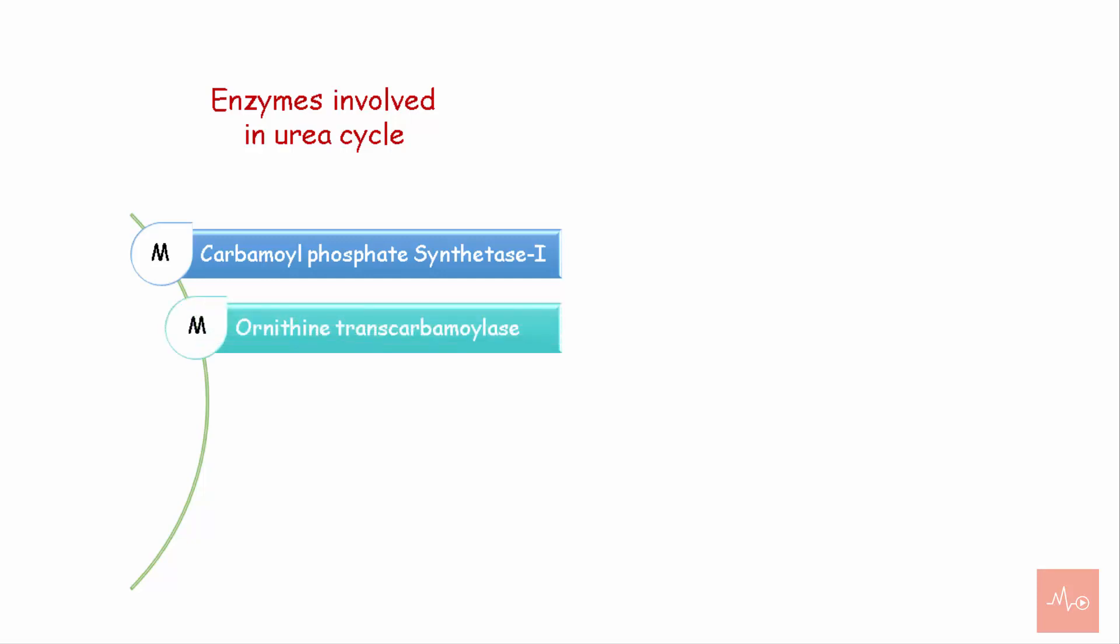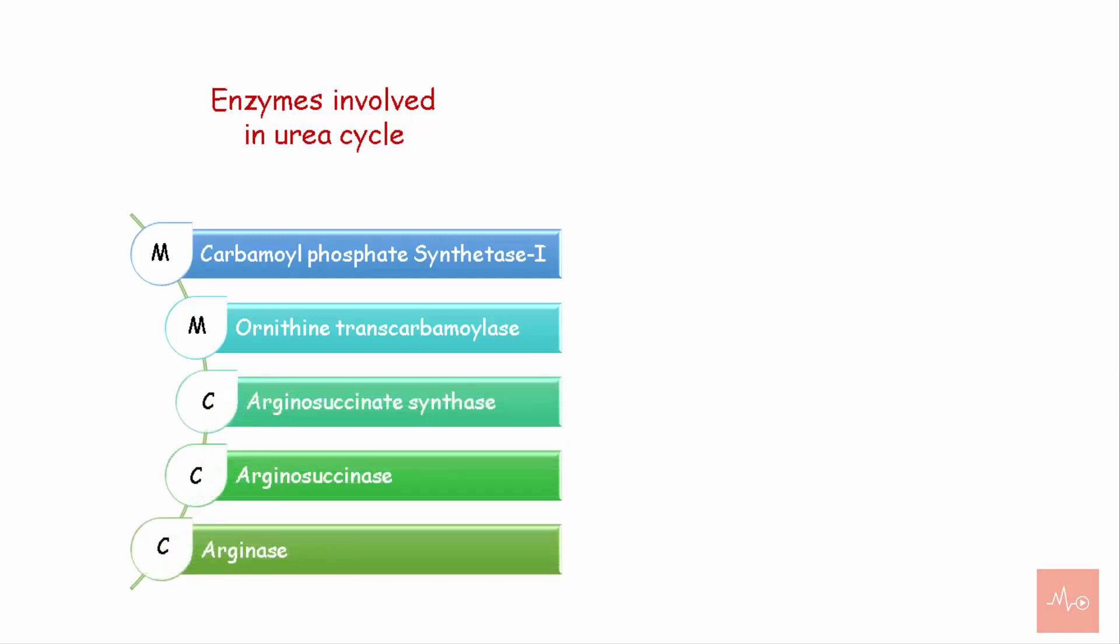So the enzymes involved in urea cycle are: two in mitochondria - carbamoyl phosphate synthetase 1 and ornithine transcarbamoylase; three in cytoplasm - arginosuccinate synthetase, arginosuccinase, and arginase. The energy utilized in urea cycle is four ATP molecules - two in step 1 and two in step 3.